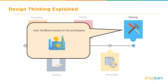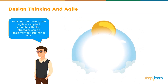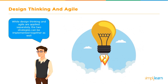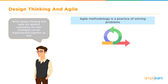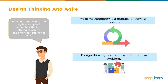Let us see how design thinking and agile can be implemented together. While design thinking and agile are applied separately, the two strategies can be implemented together as well. A majority of IT companies have begun to utilize agile in conjunction with design thinking. Agile methodology is a practice of solving problems, and design thinking is an approach to find user problems.